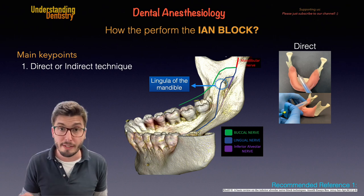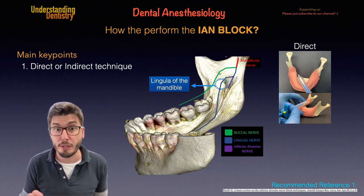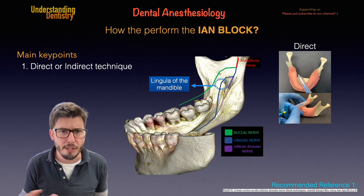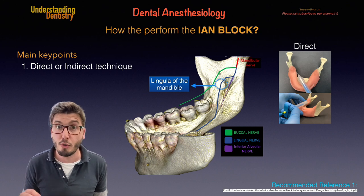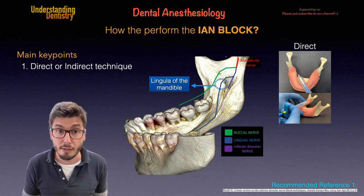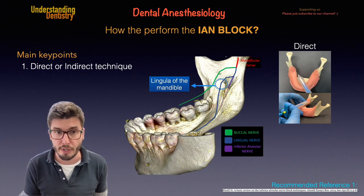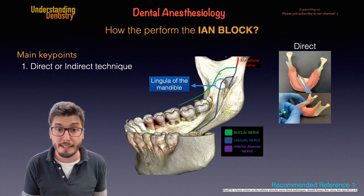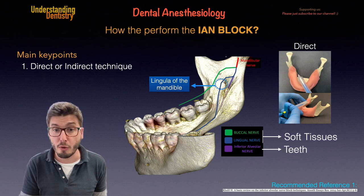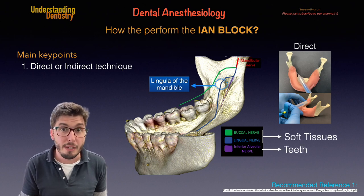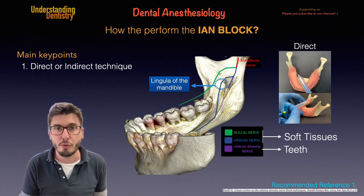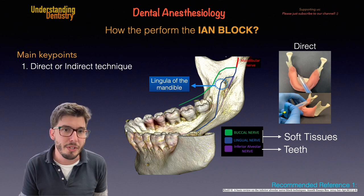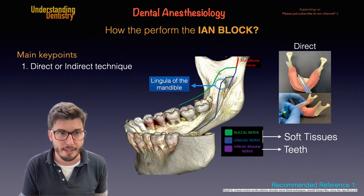We are going to go through all the details. The penetration depth ranges from 19 to 25 millimeters approximately, and we also need to know about the insertion points of the needle. Remember that the inferior alveolar nerve goes to the teeth, while the buccal and lingual nerves go to the soft tissues. Those are things we also need to remember when we choose the right technique.